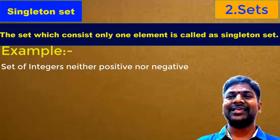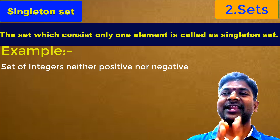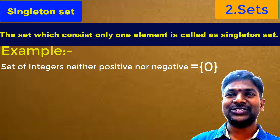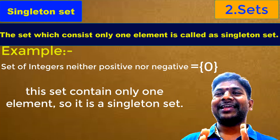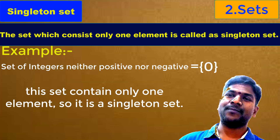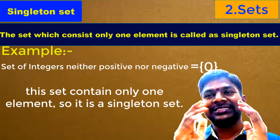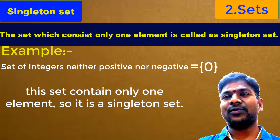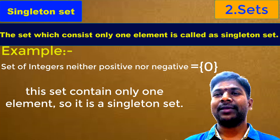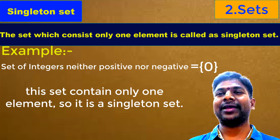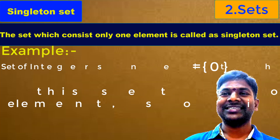So when we write the set of integers which are neither positive nor negative, we get only one element in the set: {0}. Therefore, the set of integers which are neither positive nor negative is also an example of a singleton set. You can see many examples for singleton sets, but remember: a singleton set means the set which has only one element.